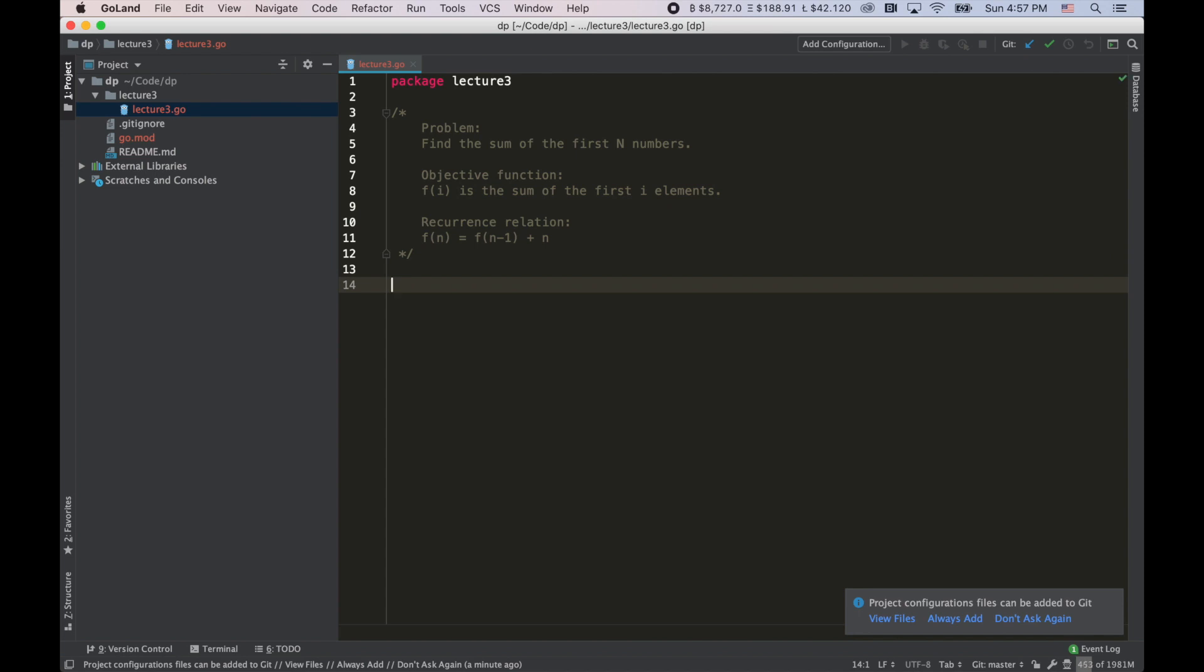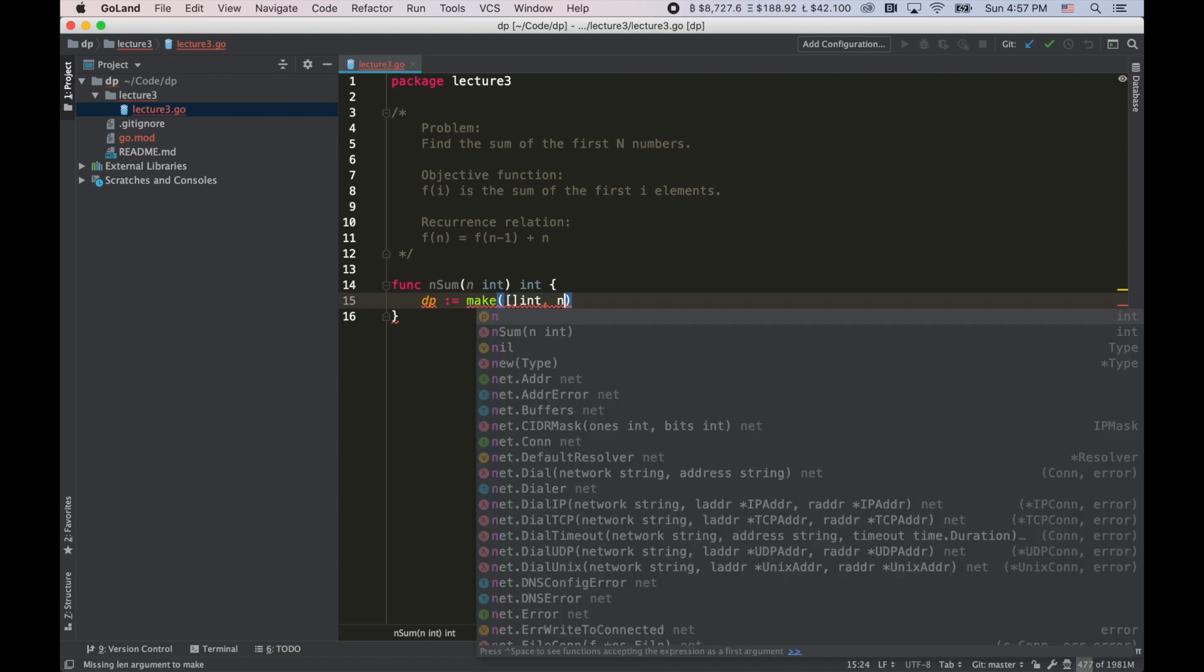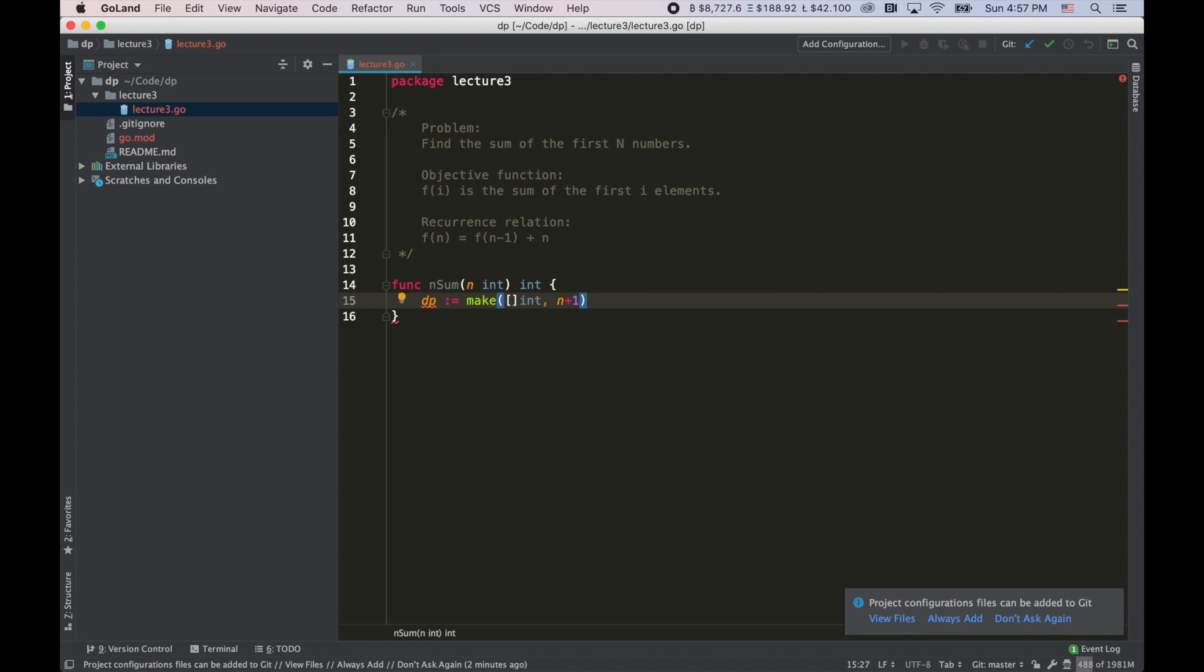Now, let's define the function. We'll give it a name nsum. As an input, we get n. It's an integer. And we need to return a sum of all the numbers, which is an integer as well. Now, the next thing I'm going to do is to define an array that will hold the result of our sub-problems. And this array will be of the size n plus 1, since array starts from 0.